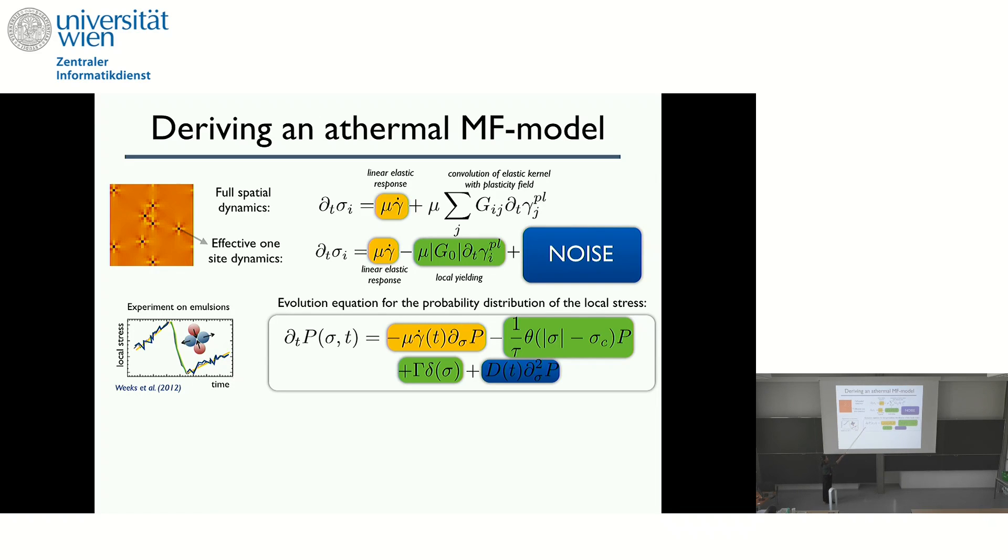And so this is the mean field model that I will be using. So instead of writing down the equation for the local stress, we write down the probability distribution of having a certain stress at time t, and how it evolves in time. And again, you have here in yellow, the elastic part that is just a shift of the distribution to the right. Then you have this green part, which is the yielding. This is described by these two terms. When I'm above the yield stress, I lose probability, and it's reset to zero in this case. And then the noise in the Hebraud-Lequeux model is modeled in a very simplified way, which is just diffusion. This is also not completely correct, but for the sake of this talk, this will be sufficient.